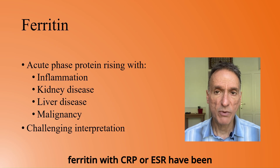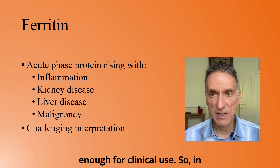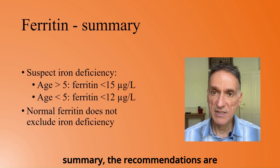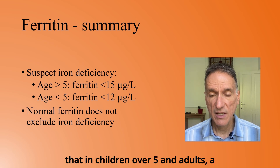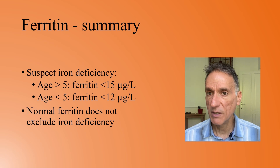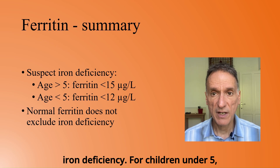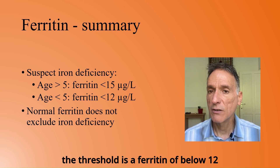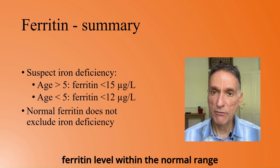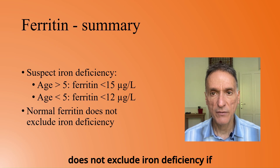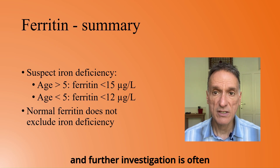Formulae to correlate ferritin with CRP or ESR have been proposed, but the evidence is not robust enough for clinical use. In summary, in children over 5 and adults, a ferritin of below 15 mcg per litre is indicative of iron deficiency. For children under 5, the threshold is below 12 mcg per litre. However, a ferritin level within the normal range does not exclude iron deficiency if there is inflammation or chronic disease, and further investigation is often needed.